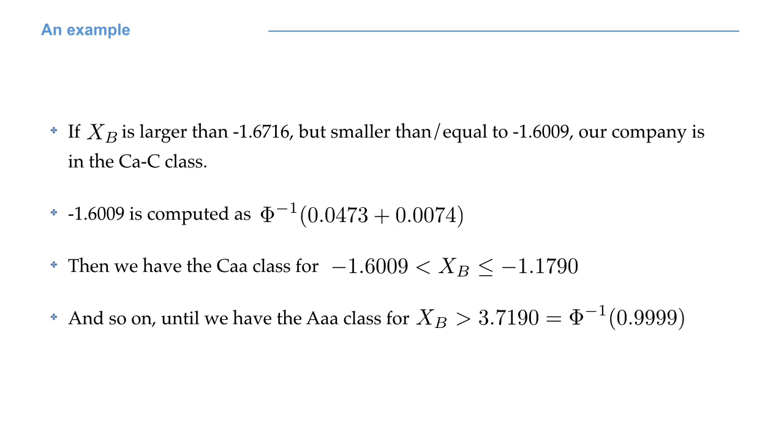If x capital B is bigger than minus 1.6716 but smaller than or equal to minus 1.6009, our company is in the CAC class. The value minus 1.6009 is computed using the quantile function, but now notice that we have to accumulate probabilities. Starting from the lowest class, that is default, we also add the probability of moving to class CAC. Class CAA is then defined by threshold minus 1.6009 and minus 1.1790. This last value is obtained by inverting the cumulative probability. Just look at the computation I did with QNORM.